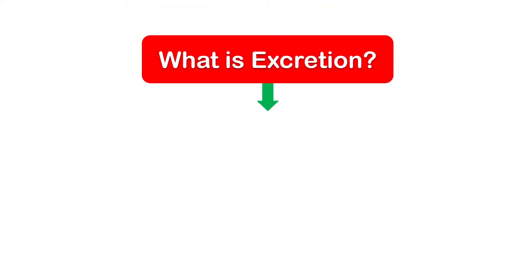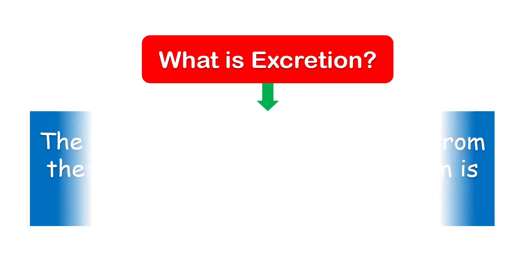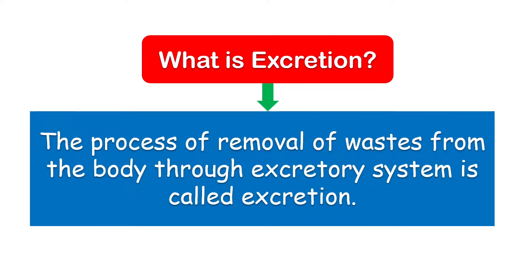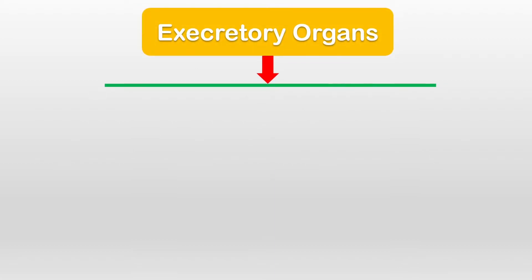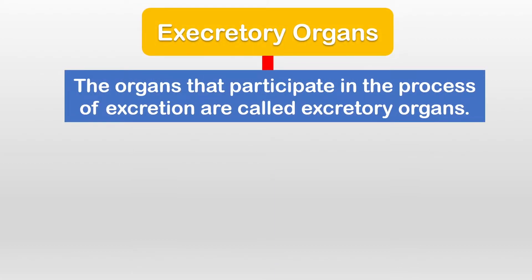Today's topic is excretion. What is excretion? The process of removal of waste from the body through the excretory system is called excretion. The wastes like urine, sweat, etc. are removed by the excretory organs. The organs that participate in the process of excretion are called excretory organs.